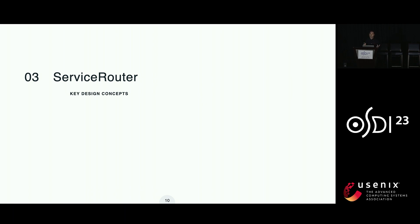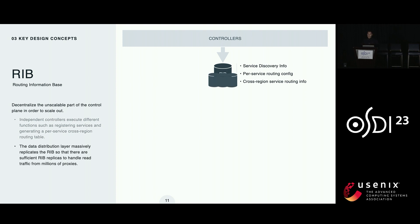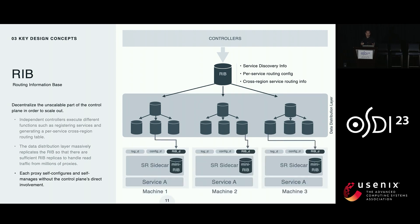Next I will introduce some key design concepts behind SR. Service Router needs to scale service discovery to millions of proxies and clients. To do that, it uses independent controllers which execute different functions, such as registering services or generating per-service cross-region routing tables using global information. These controllers independently update the routing information base but are not concerned with directly configuring or managing the individual proxies. In contrast, the RIB is massively replicated so that there are sufficient replicas to handle read traffic from the millions of proxies that can now self-manage and self-configure. This self-management is really what allows the control plane controllers to scale.